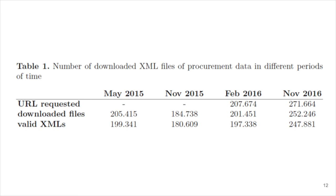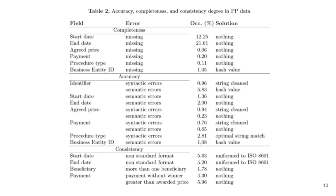This table reports details of the harvesting phase that was accomplished in four different periods, starting from May 2015. This table shows for each field of the contract the type of data quality issue, the occurrence of such issue in percent, and the adopted solution where available.